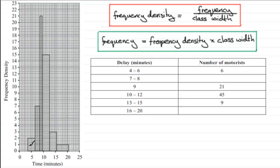We can check it on the first bar, which shows a delay in minutes from 4 to 6. We have to be careful here because it's continuous data, measured to the nearest minute, so it's really going from 3.5 to 6.5. That means the width, instead of being 2 units, is really 3 units. With a frequency density of 2, we get 2 times 3 equals 6, giving us a frequency of 6.